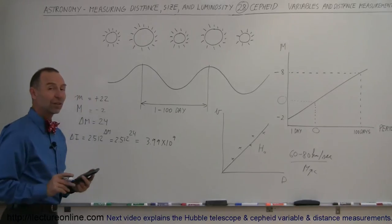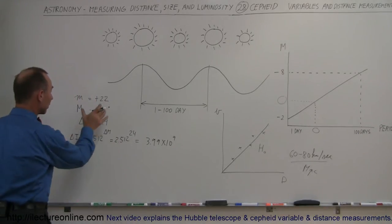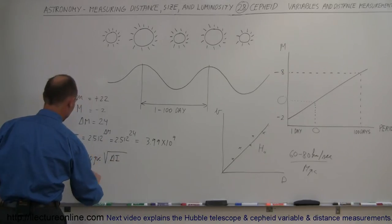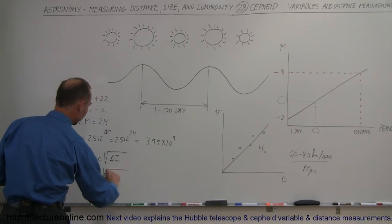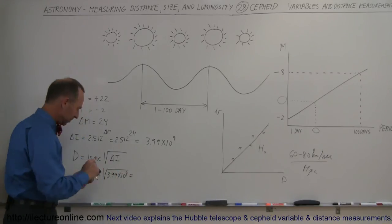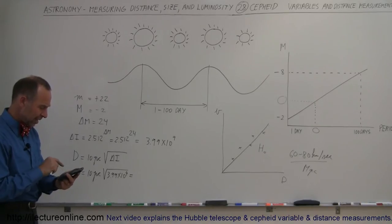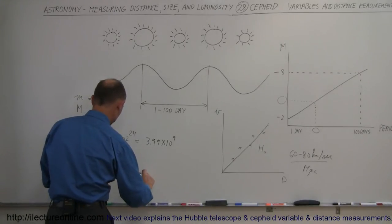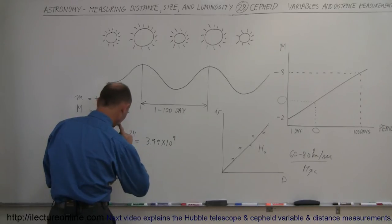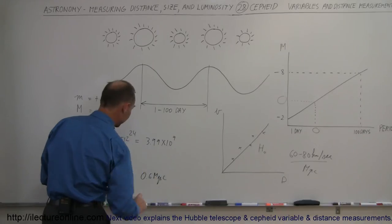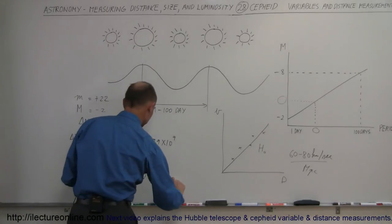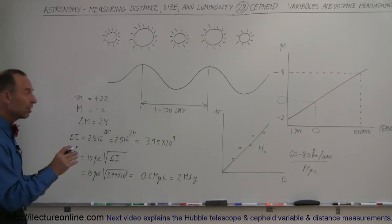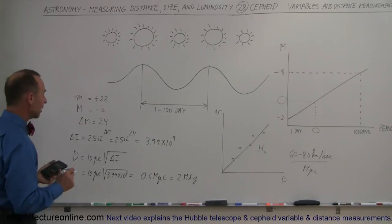To find the maximum distance we can see with this telescope, the distance equals 10 parsecs times the square root of the intensity difference. That's 10 parsecs times the square root of 3.99 times 10 to the 9th, which equals about 0.6 megaparsecs — approximately 2 million light years. So the dimmest Cepheid variables can only be seen at a maximum distance of about 2 million light years.